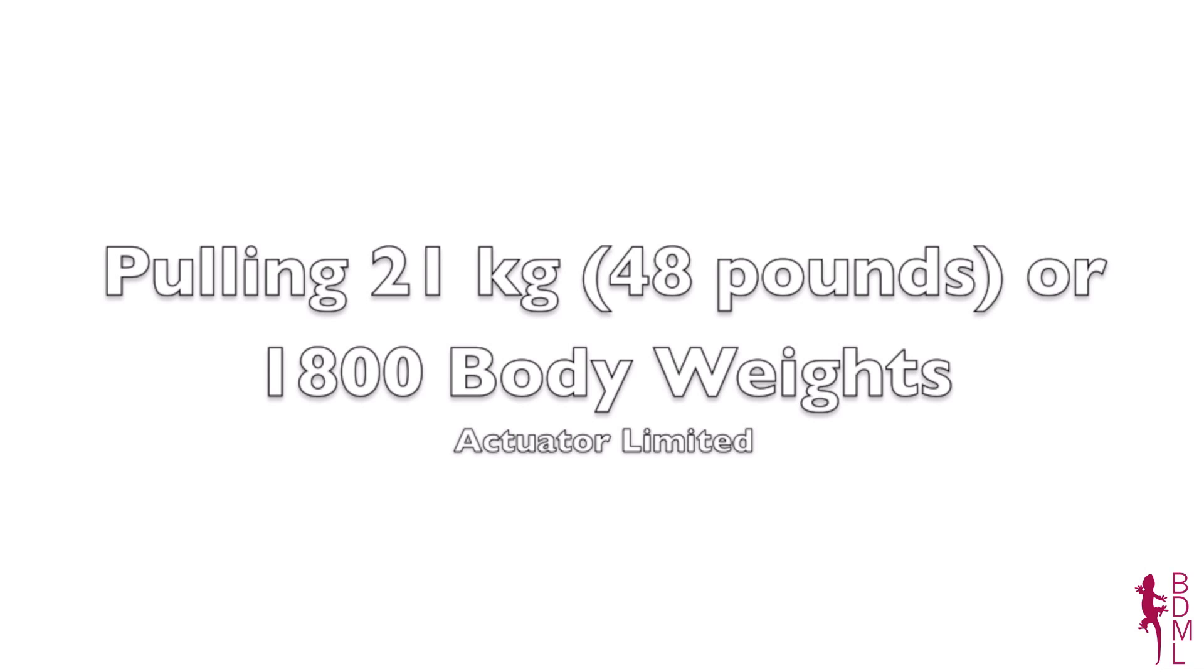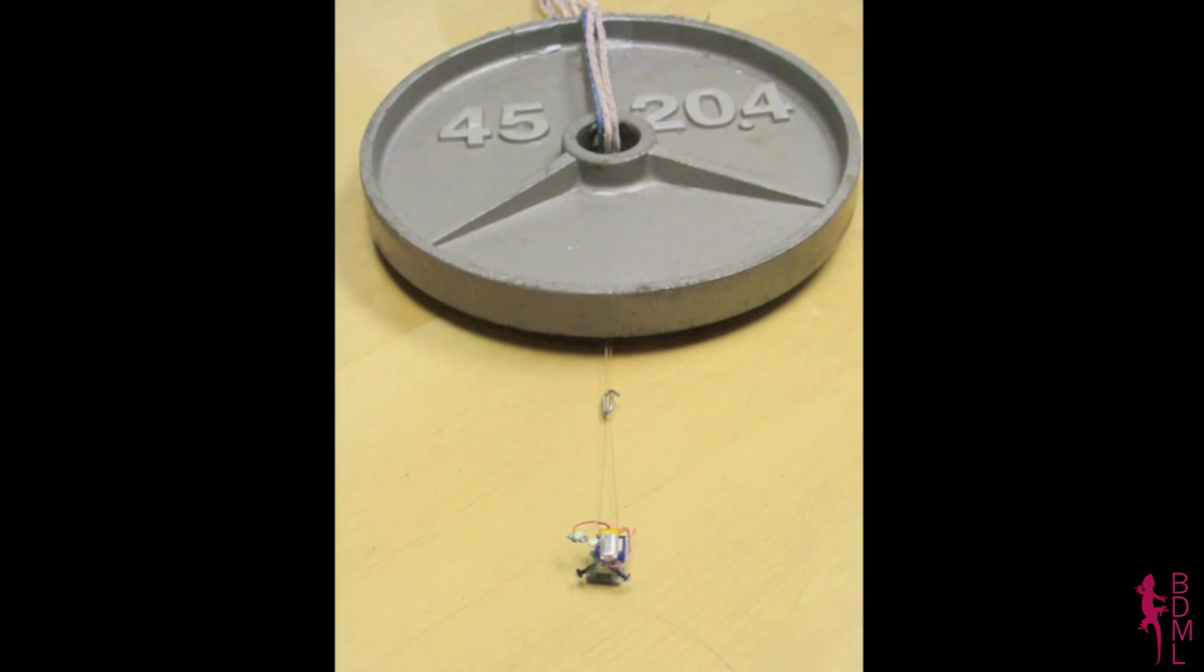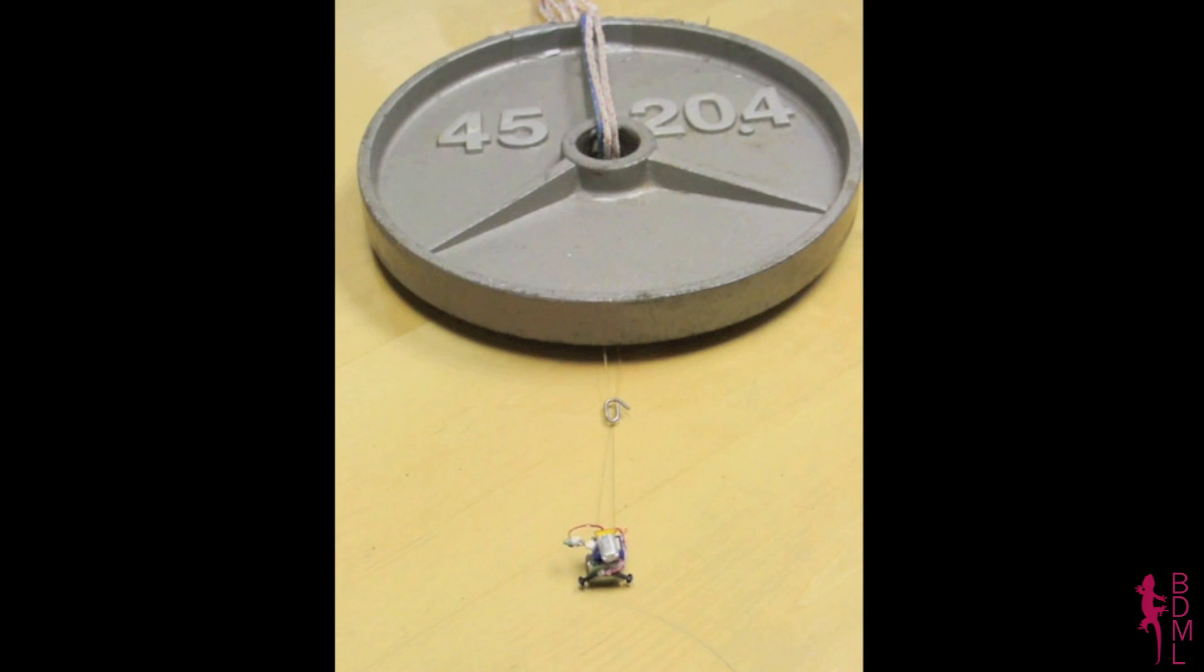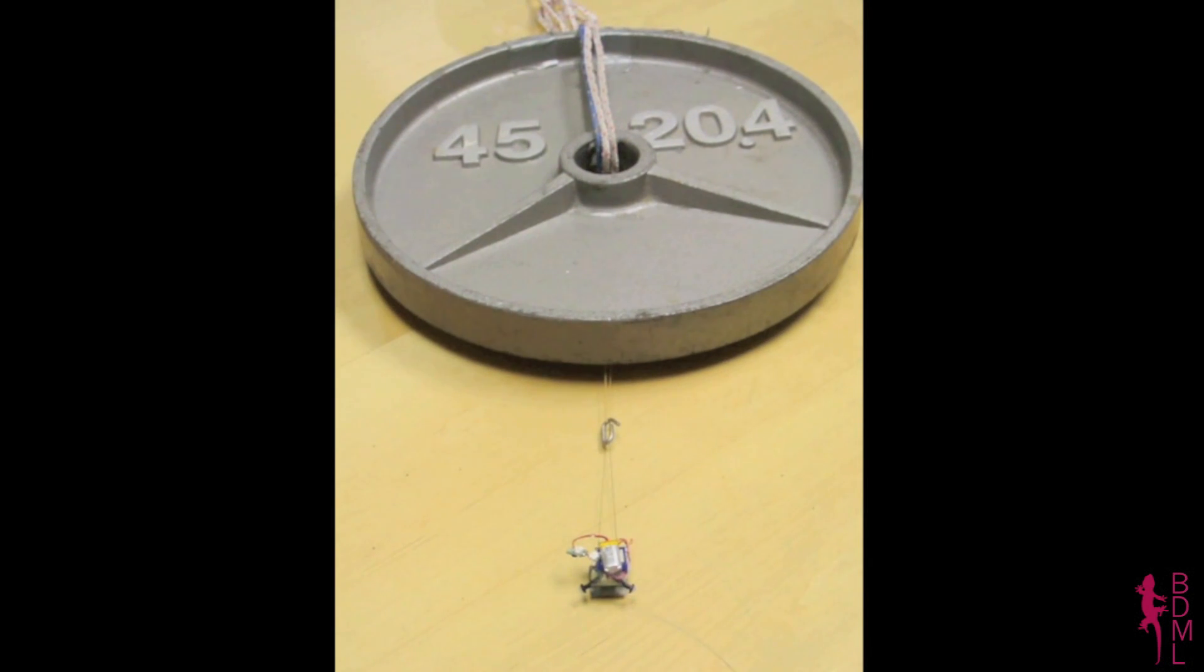Finally, we show the 12 gram robot moving 21 kilograms or 1,800 body weights. This test shows the limit of the actuators, not the adhesives, which should be able to move almost twice that much.